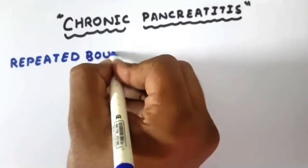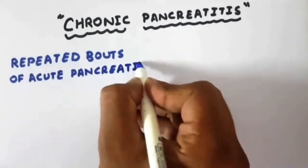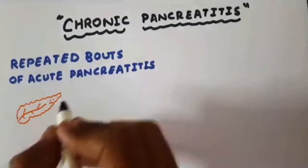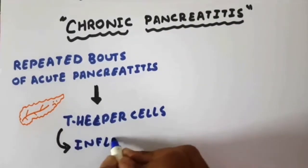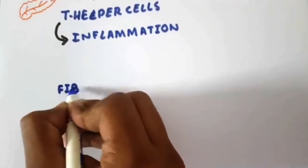Repeated bouts of acute pancreatitis result in T helper cells causing inflammation, and as a result, stellate cells cause repair through fibrosis.